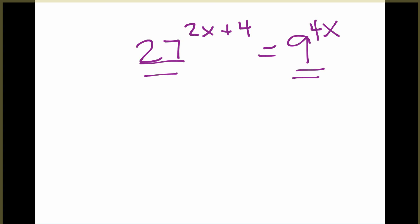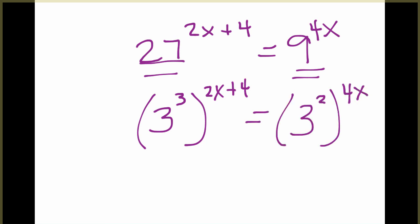I look at the 27 and 9, and I immediately know the base I want to use is 3. Because 27 is 3 cubed, and 9 is 3 squared. Just like the previous example, the 3s now can cancel.